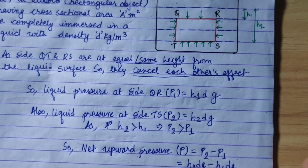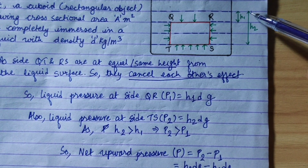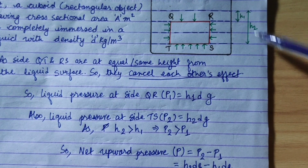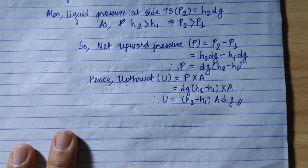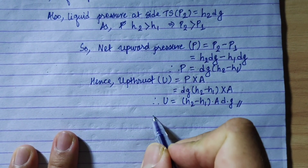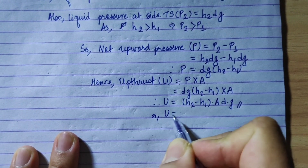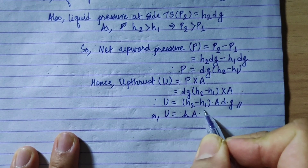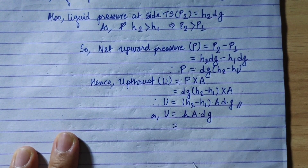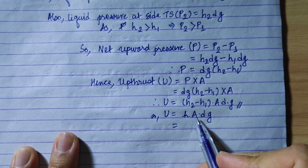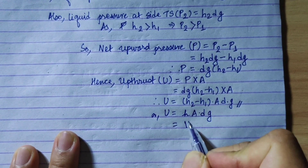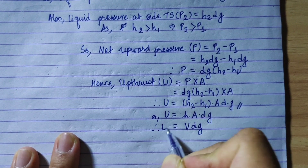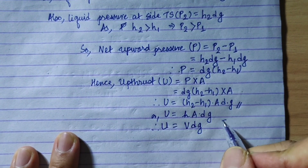Now, looking at the diagram, (h2 - h1) is the height of the object — let's call it h. So we can write: U = h × A × d·g. From mensuration, base area times height equals volume. So h × A = Volume V. Therefore another correlation is proved: U = V·d·g, since V = h × A.